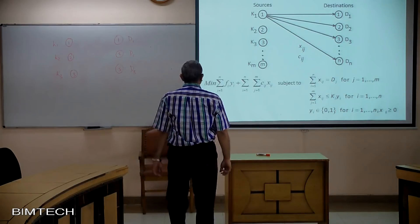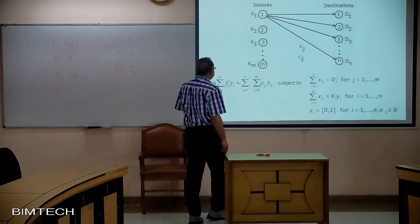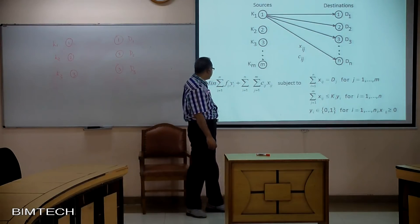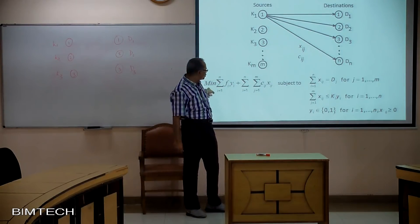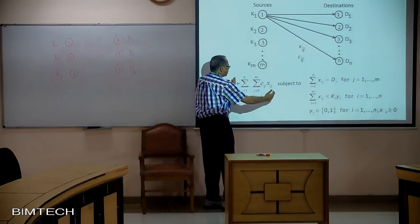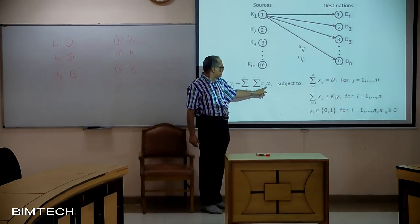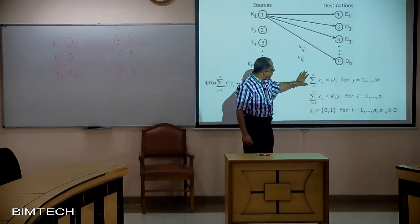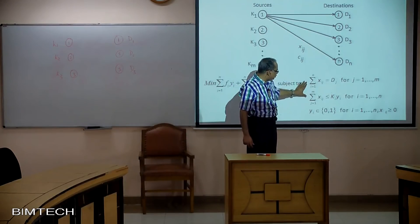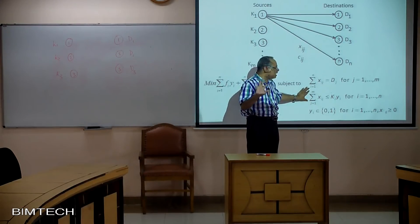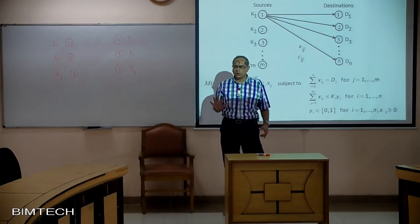In general, nothing has really changed. If you see our objective function, this part — summation C_ij X_ij — remains the same. Our first constraint and the second constraint more or less are the same.